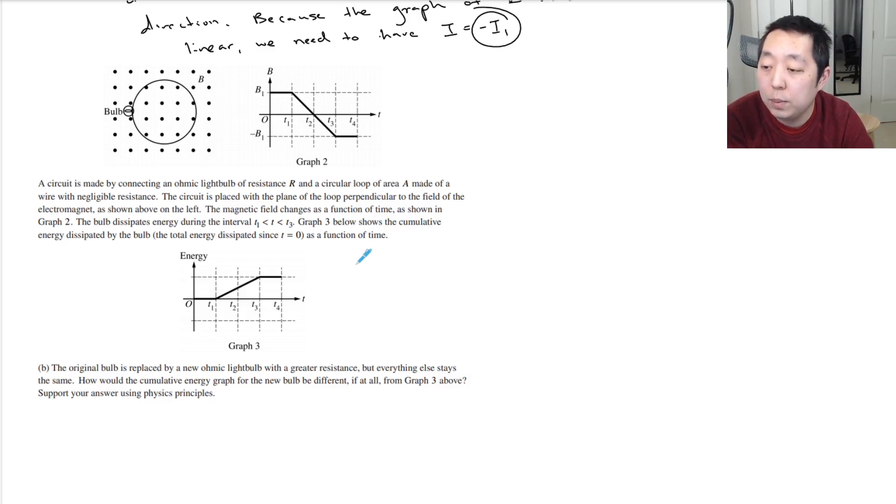The magnetic field changes as a function of time shown in graph 2. The bulb dissipates energy during the interval. Graph 3 shows the cumulative energy dissipated by the bulb. The original bulb is replaced with a new ohmic light bulb with greater resistance. How would the cumulative energy graph for the new bulb be different from graph 3? Support your answer using physics principles.